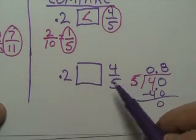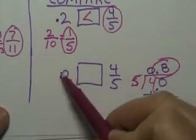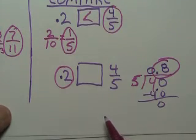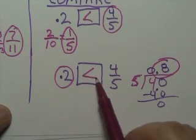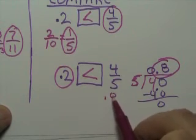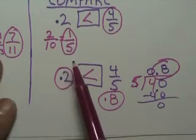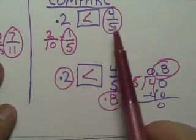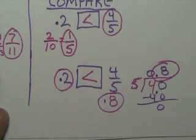So this side is 0.2, and this side is 0.8. Obviously 0.2 is smaller than 0.8. So you can choose whichever way you like, if you want to change a decimal to a fraction and compare that way, or change a fraction to a decimal and compare that way. It's your choice.